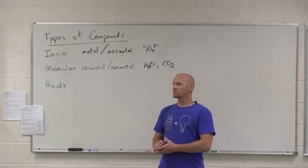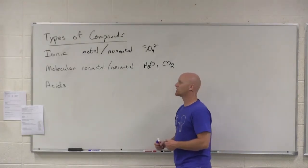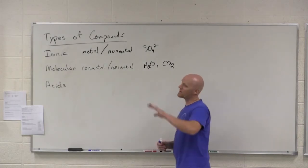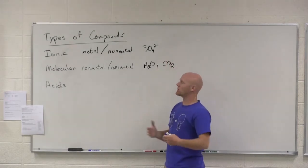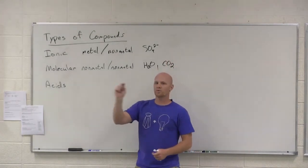Technically not so much the case. Unless you had a 58.44 gram crystal, then it would be Avogadro's number of each. But in this case, it depends on the crystal size. The bigger the crystal, the more you have of each. But you don't just have one sodium and one chloride.